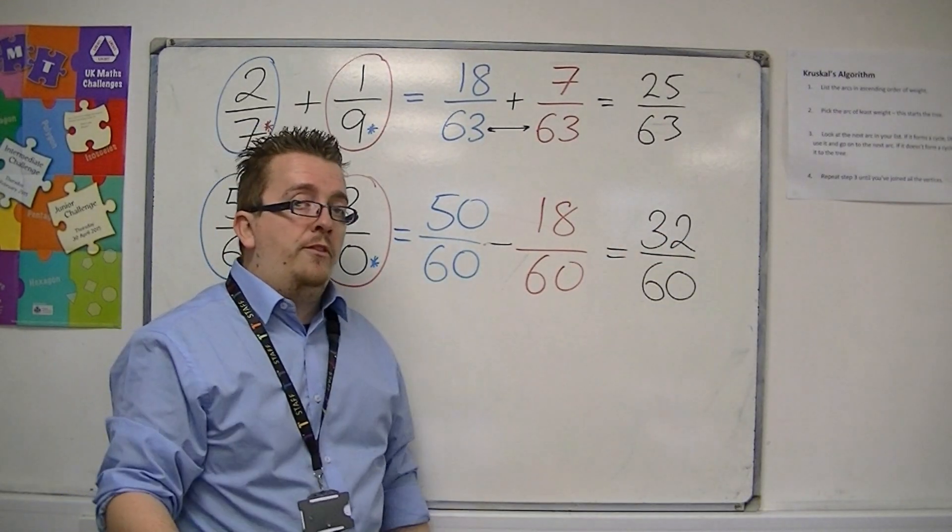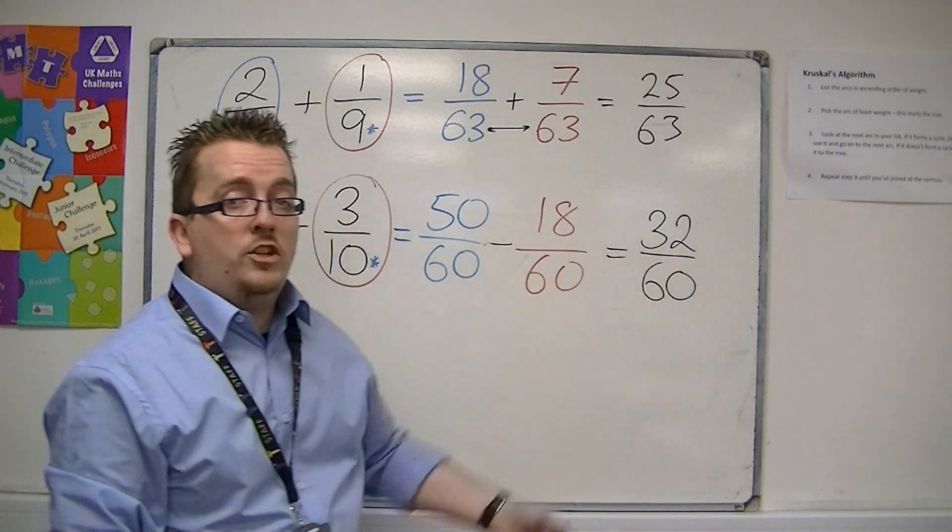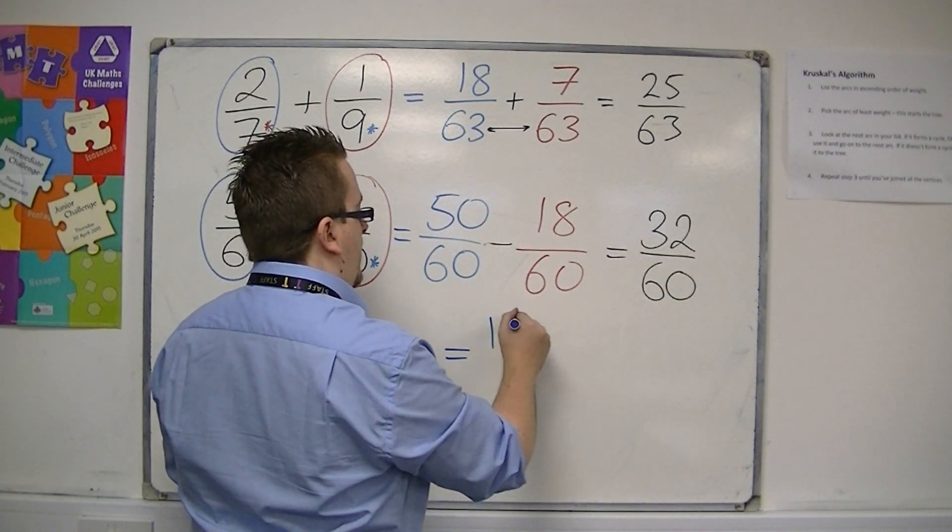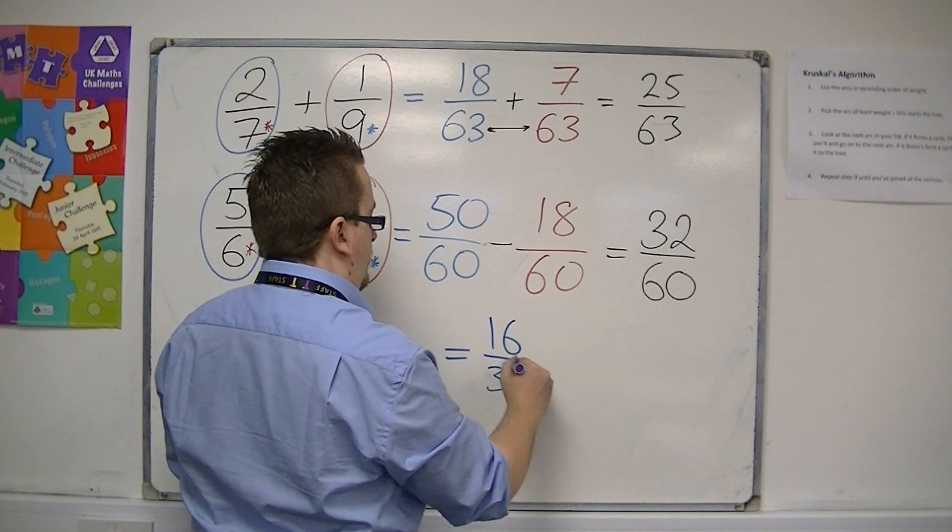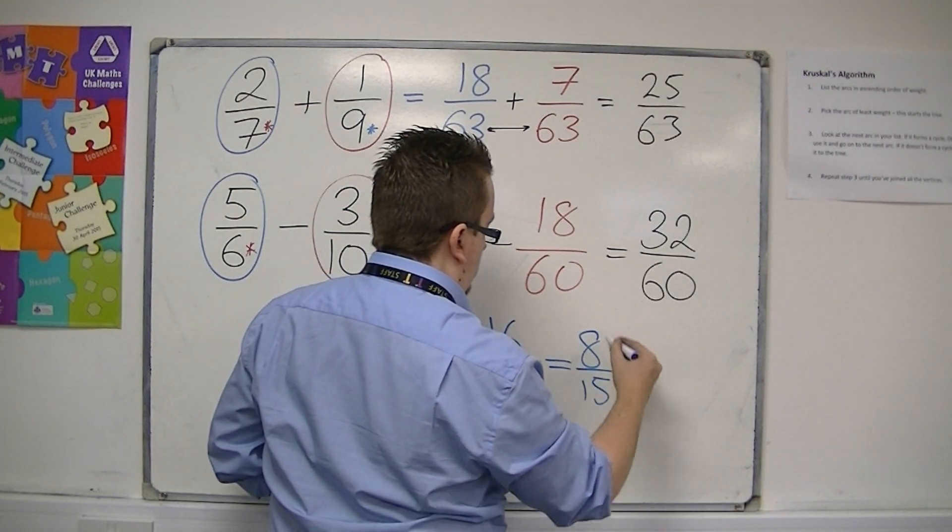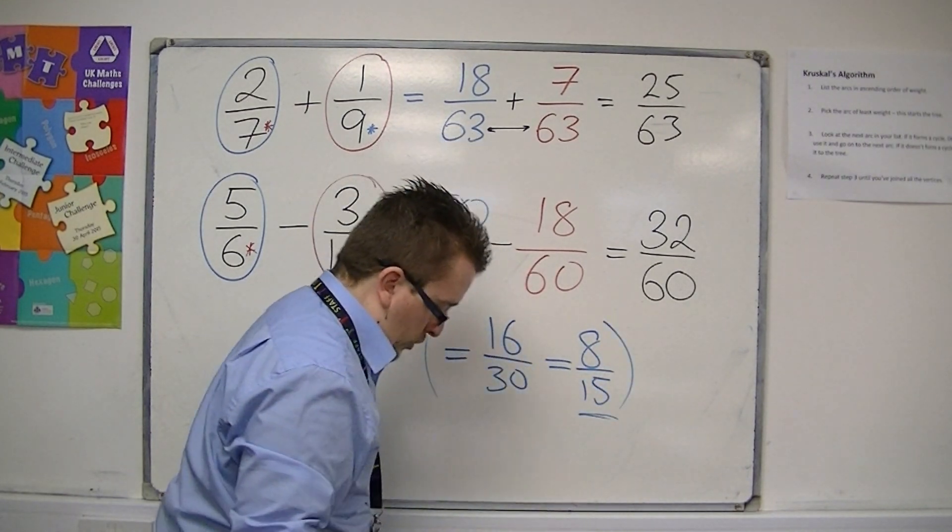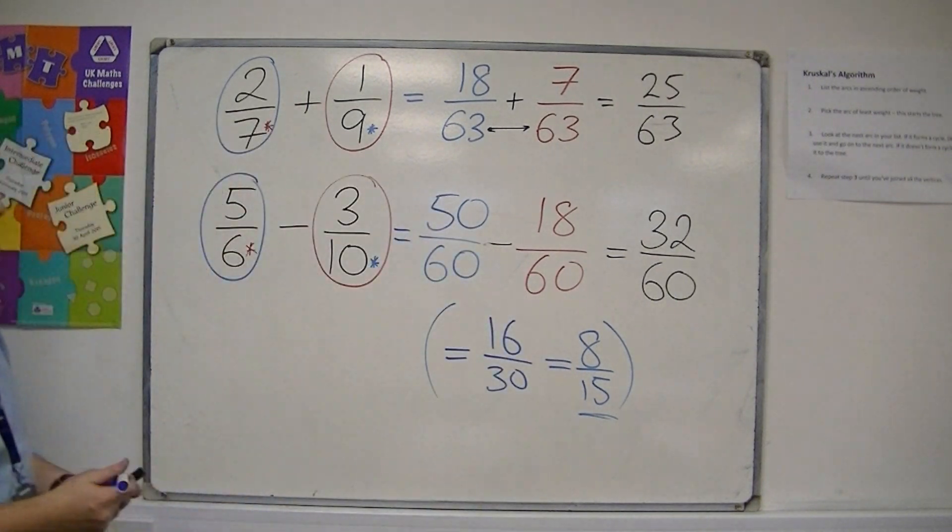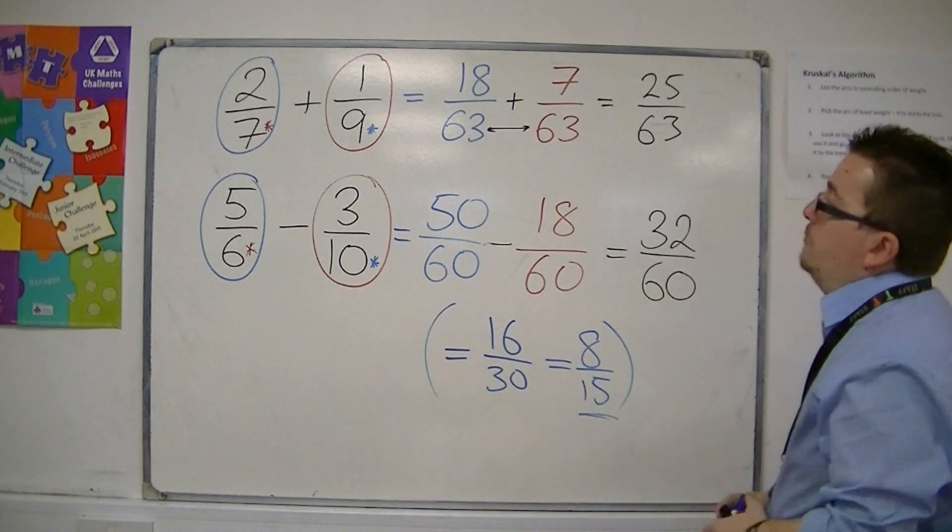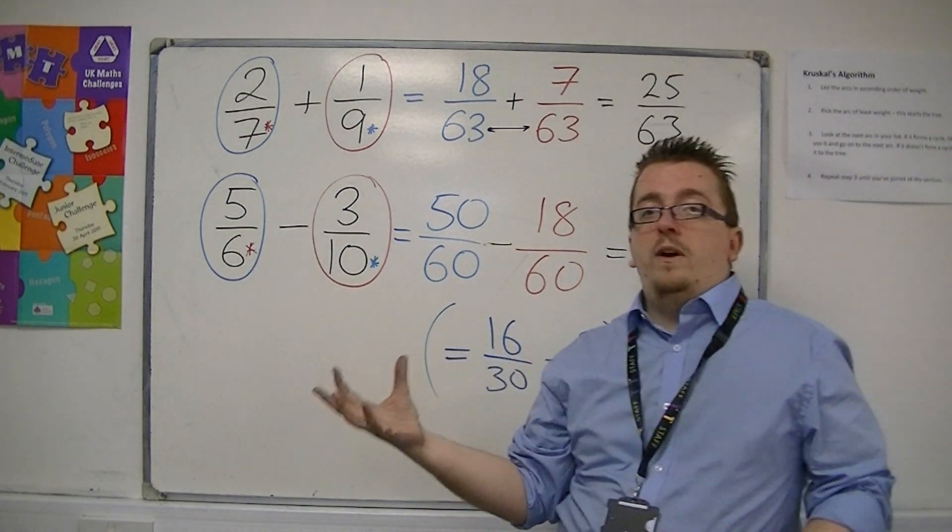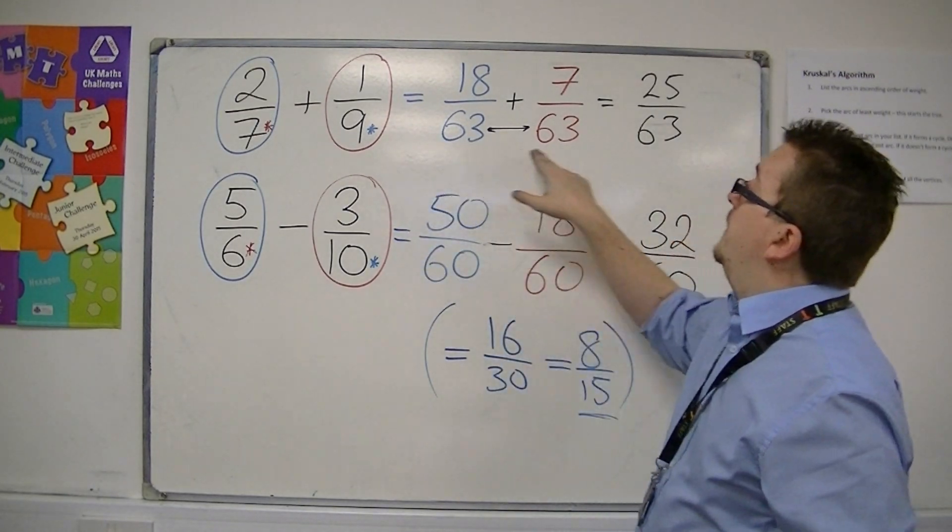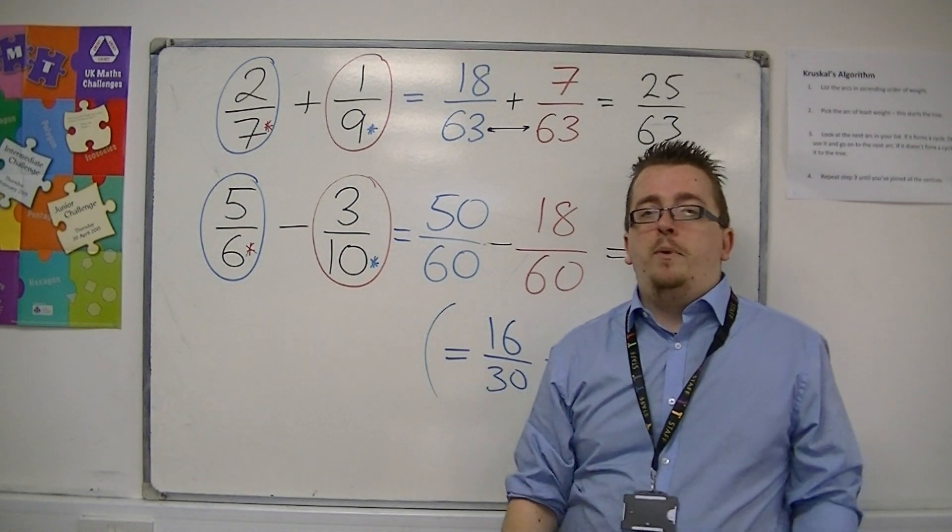this fraction can be simplified by dividing top and bottom by 2, which will get us to 16 over 30. Divide top and bottom by 2 again, we get 8 over 15. And that is as far as you can possibly go with that fraction. So when it comes down to it, adding and subtracting fractions is much the same way as before, but trying to find these equivalent fractions to make the denominators the same, which will allow you to combine the fractions, whether it be an addition or a subtraction.